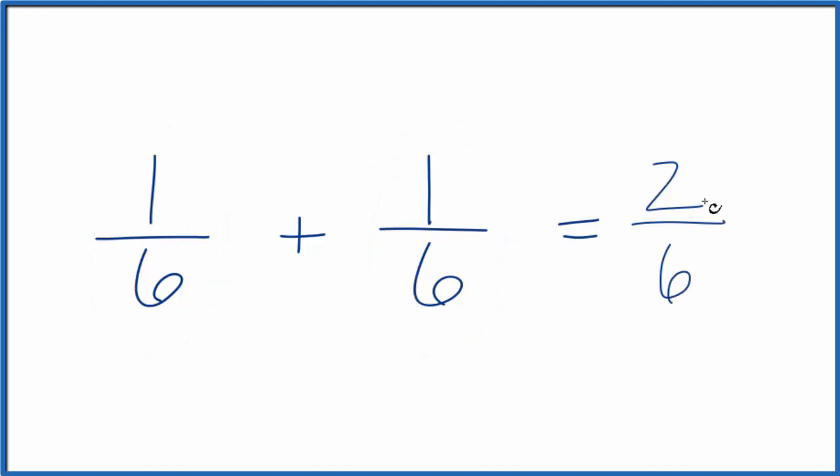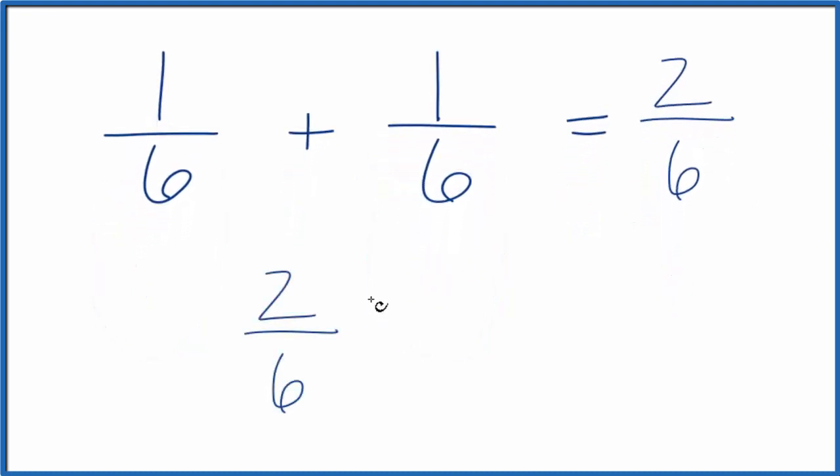We could simplify this further because we could divide two into two and two into six evenly. Two into two is one, and then two into six is three.